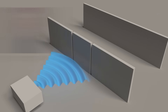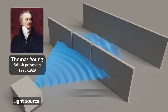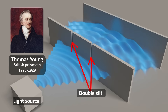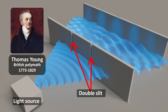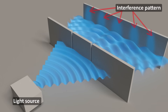About 100 years later, in 1801, Thomas Young's double slit experiment seemed to show that light must be a wave. Because when a beam of light was split through a double slit, the resulting overlapping beams of light created an interference pattern. This phenomenon could only be explained if light was a wave.